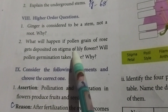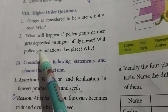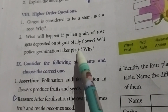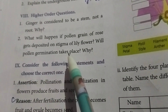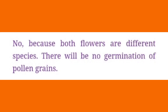Second question: What will happen if pollen grains of a rose get deposited on the stigma of a lily flower? Will pollen germination take place? Why? Answer: No, because both flowers are different species. There will be no germination of pollen grains.